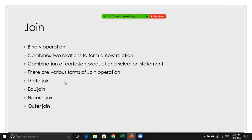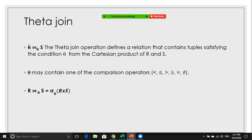There are various forms of join operations: theta join, equi join, natural join, and outer join. For theta join, we write it with the join notation. The theta join operation defines a relation that contains tuples satisfying the condition theta from the Cartesian product of R and S. Theta may contain one of the comparison operators: less than, less than or equals to, greater than, greater than or equals to, equals to, or not equals to.